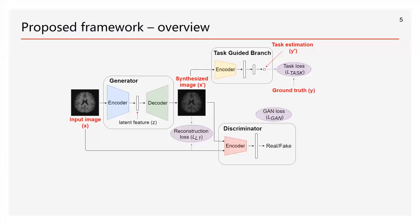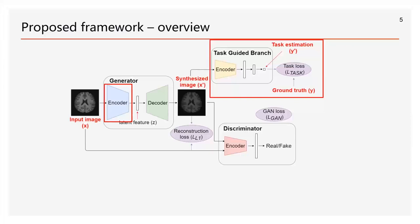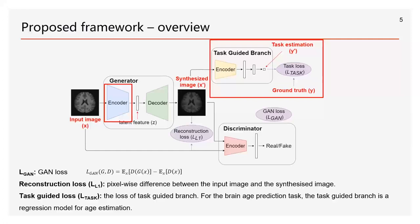This is an overview of the proposed framework. This method is based on a GAN model, which includes a generator to generate images from a latent feature and a discriminator to determine whether the image is real or fake. To extract the latent feature from images, we add an encoder before the decoder of the generator. A task-guided branch is appended to the generator, aiming to guide the generator to learn task-specific features. This model includes three cost functions: the first is the original GAN loss; the second is a reconstruction loss, which evaluates the quality of the synthesized image by minimizing the pixel-wise difference between the input image and the synthesized image; and the third is the task-guided loss. In this paper, the task-guided branch is a regression model for age prediction, so the loss is the mean squared error between predicted age and the ground truth.